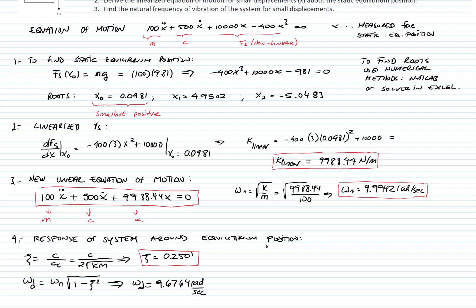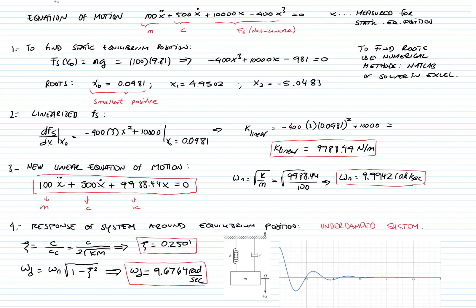If we use a graph and calculate, we can see the response. As you see, the amplitude, if we give an initial condition, the amplitude reduces with time exponentially. Remember that curve that involves that response is e to the negative zeta omega n t.